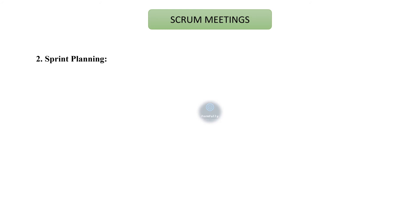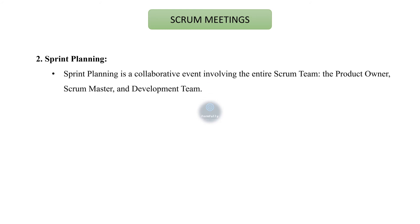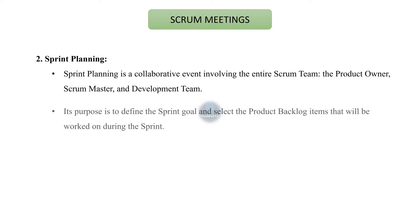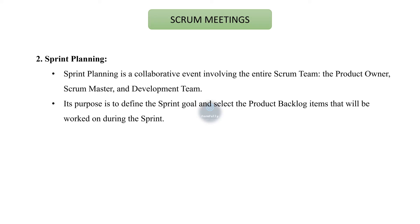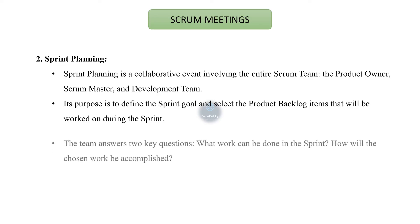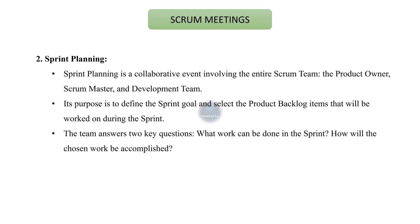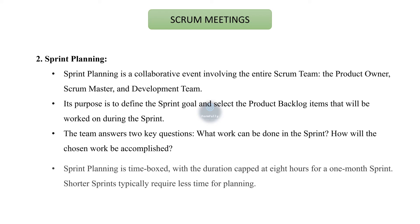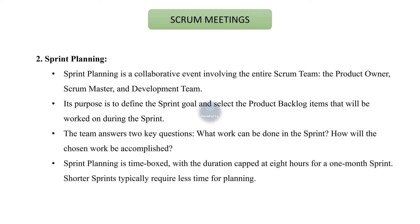The second Scrum meeting is sprint planning, a collaborative event involving the entire Scrum team — the product owner, Scrum master, and development team. Its purpose is to define the sprint goal and select the product backlog items that will be worked on during the sprint. The team answers two key questions: what work can be done in the sprint, and how will the chosen work be accomplished? Sprint planning is time-boxed, with duration capped at eight hours for a one-month sprint; shorter sprints typically require less time for planning.